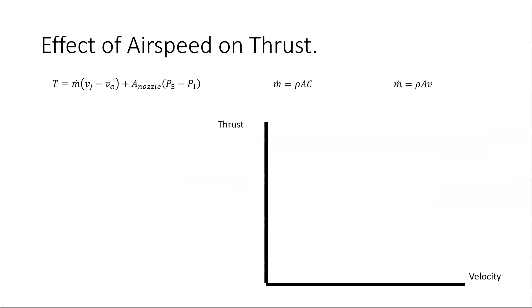So what effect does this have on thrust? If we take the thrust equation, then thrust is equal to the mass flow times the velocity of the jet stream minus the velocity of the aircraft plus the area of the nozzle times the pressure differential between the nozzle and the engine. The mass flow is rho AC, but I'm going to go back to using V for velocity here.